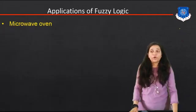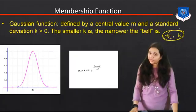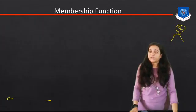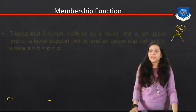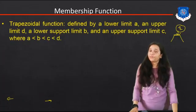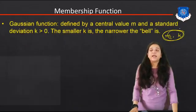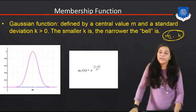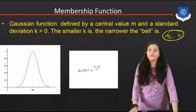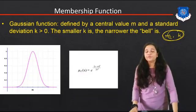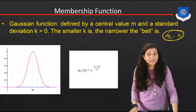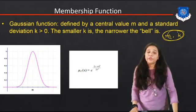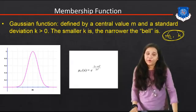So this is all about the membership function. We generally have three types of membership functions: the triangle function, the trapezoid function, and the Gaussian function. Depending upon the plant requirement, we use the appropriate type of membership function to find out the value between the true and false condition.